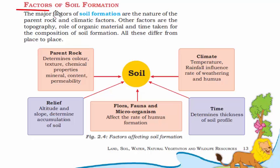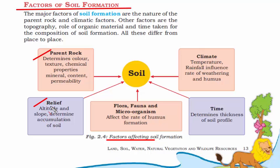Now let's understand how soil is formed. There are five factors that affect soil formation. The first is the parent rock — the rocky layer at the bottom of the soil, responsible for the color and texture of the soil. The second factor is relief, which is the topography — the shape of the land, whether high altitude or a slope, which determines the accumulation of soil. If land is elevated, most soil accumulates at the bottom, which is why mountainous regions have rocks on top and soil lower down.